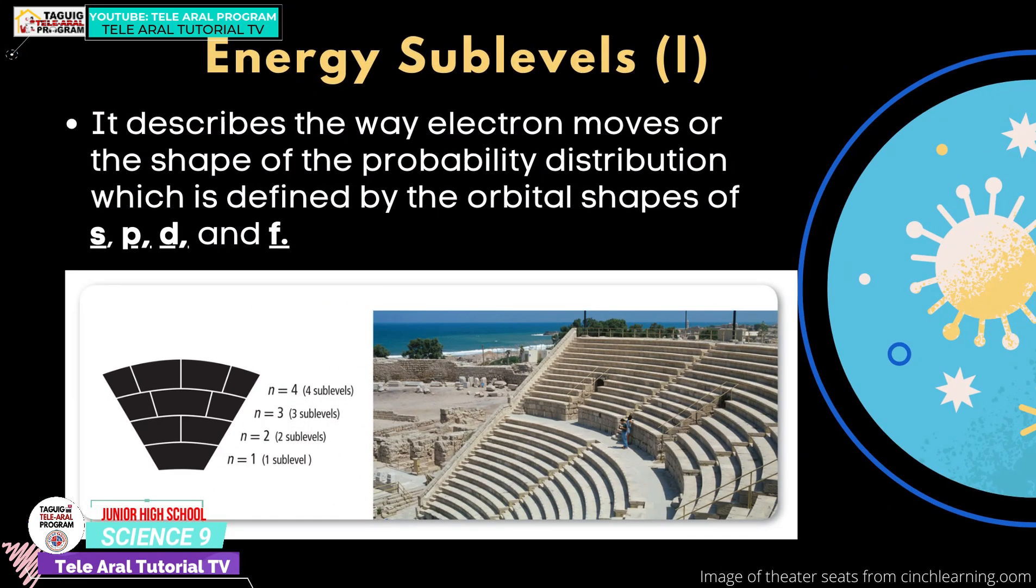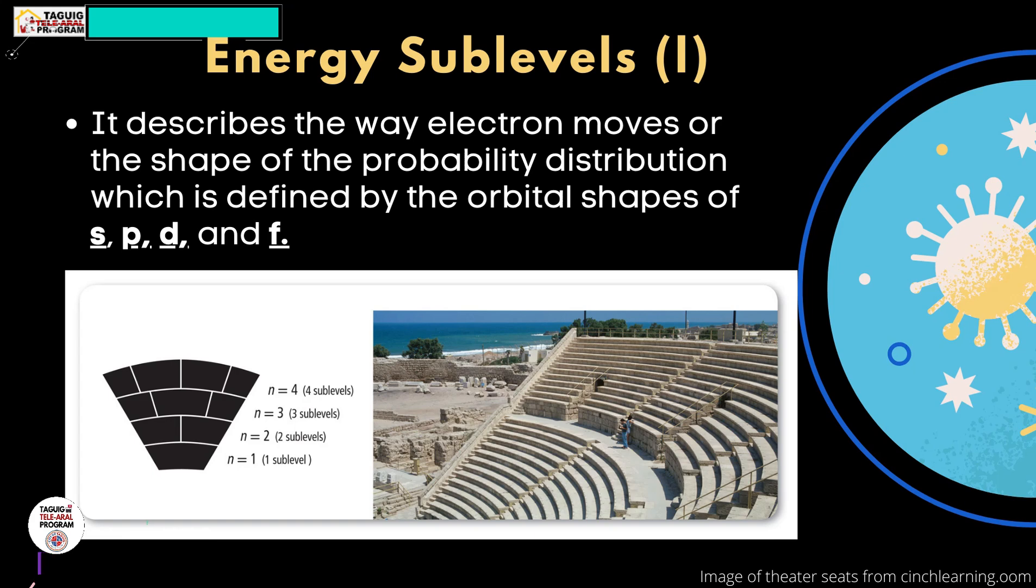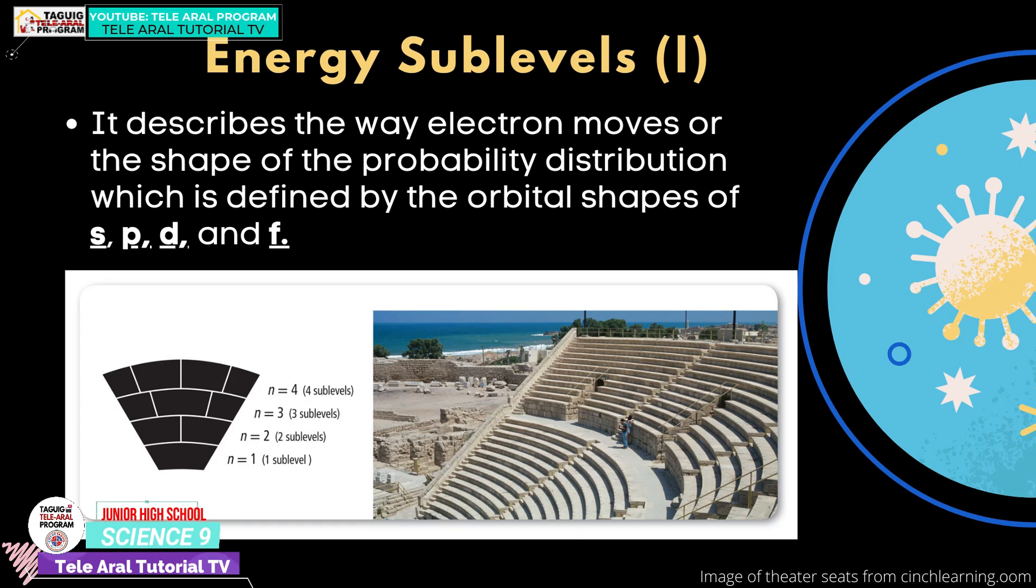In each energy level are sublevels. These are the shapes of the probability distribution, which is defined by the orbital shapes of S, P, D, and F. As you increase the energy level, the sublevels also increase, just like in this amphitheater. You get more regions of seats as you go farther from the center of the stage.